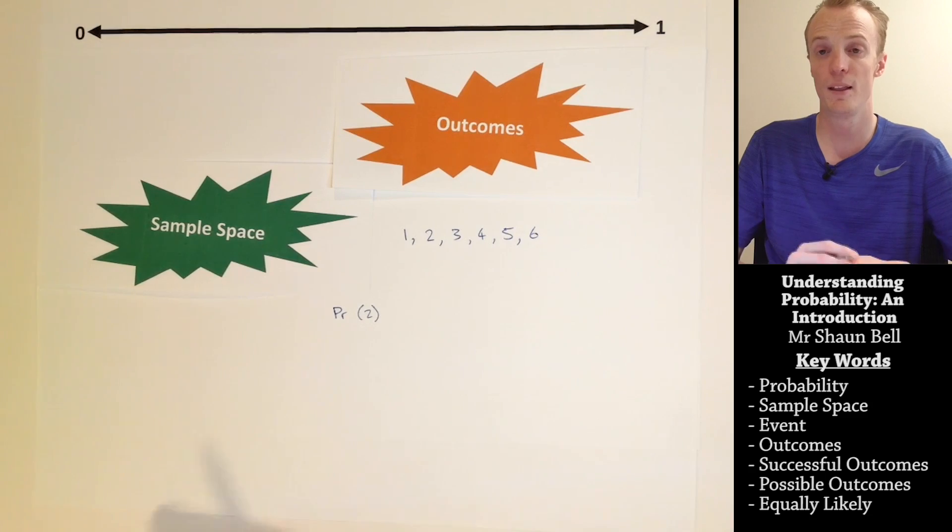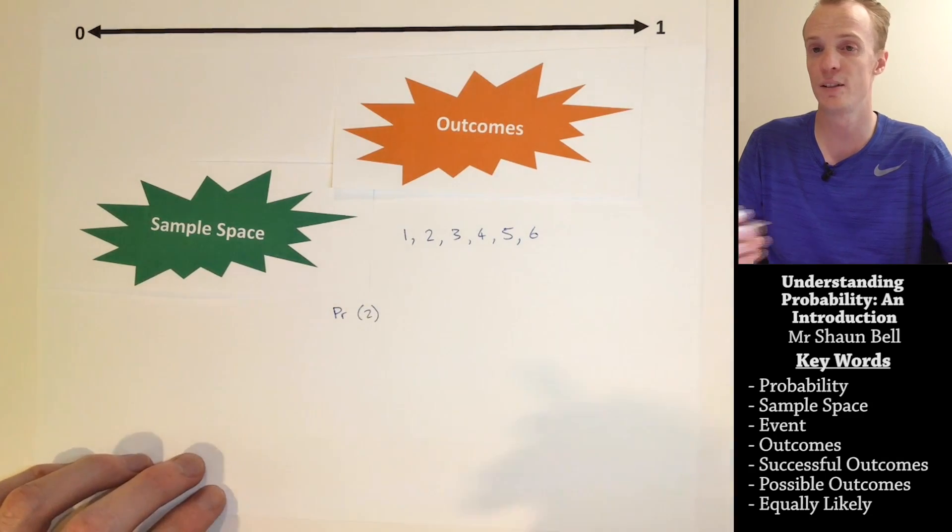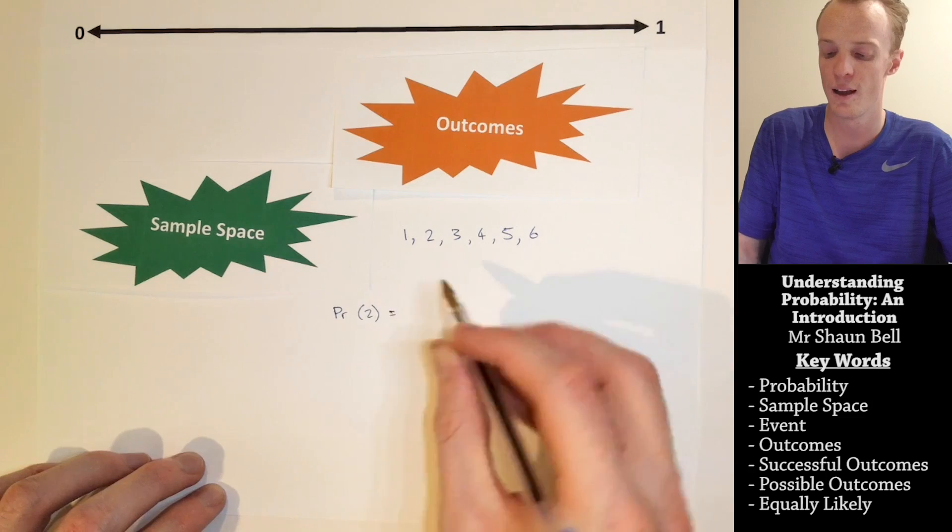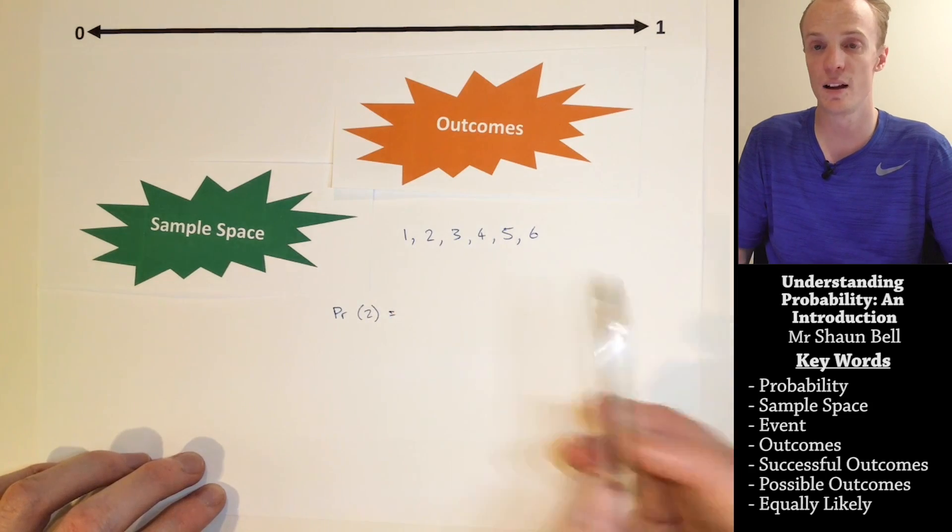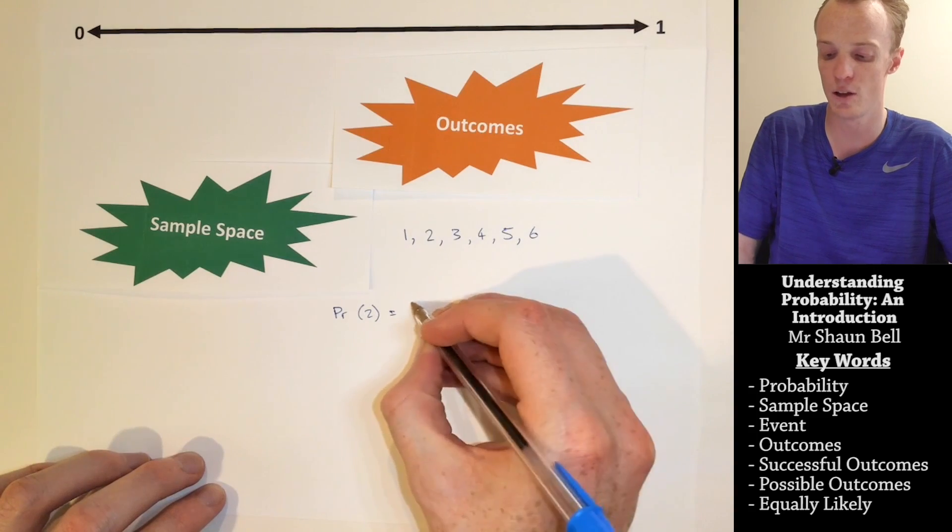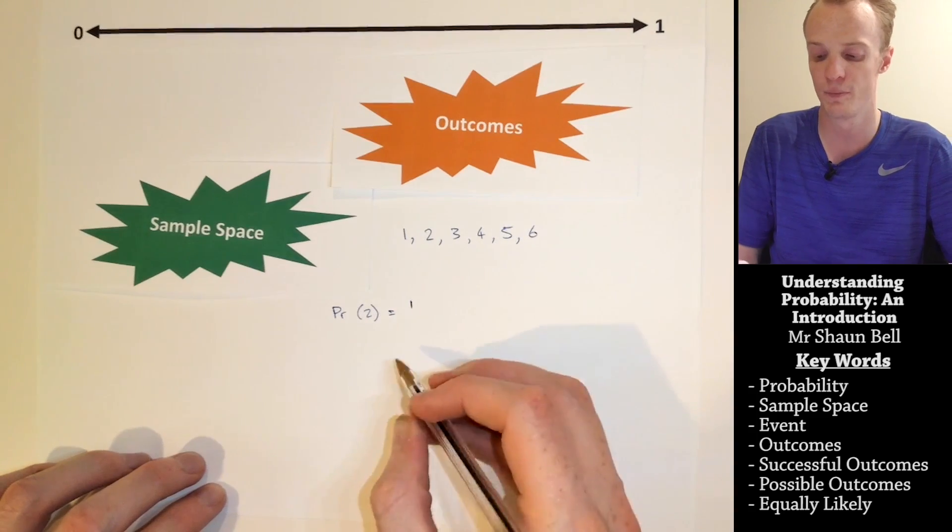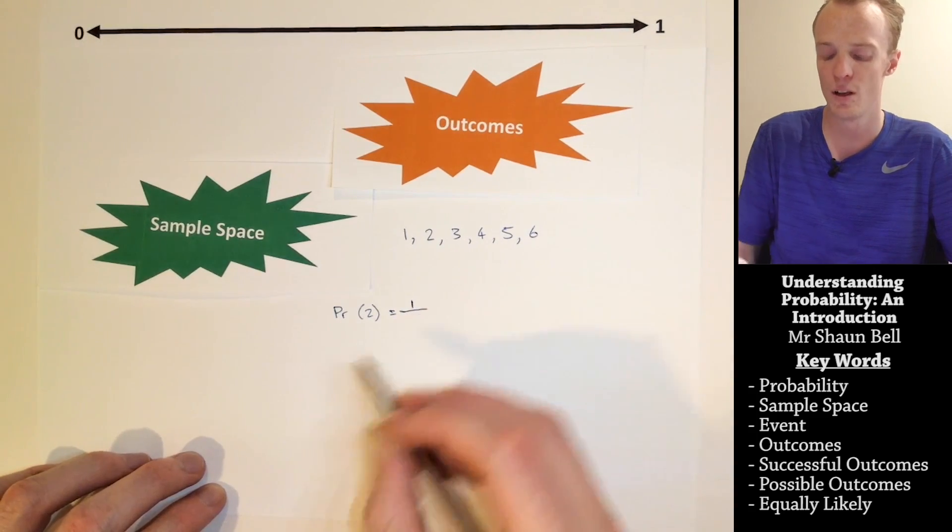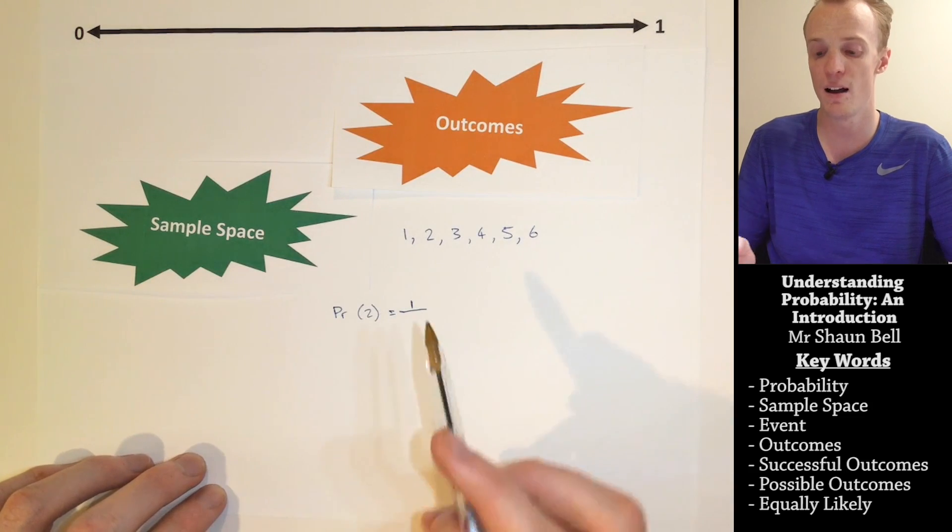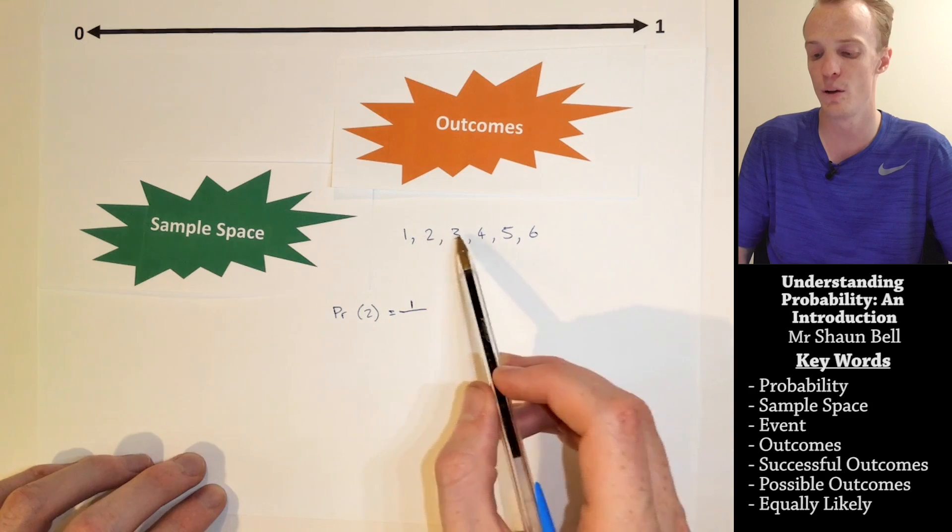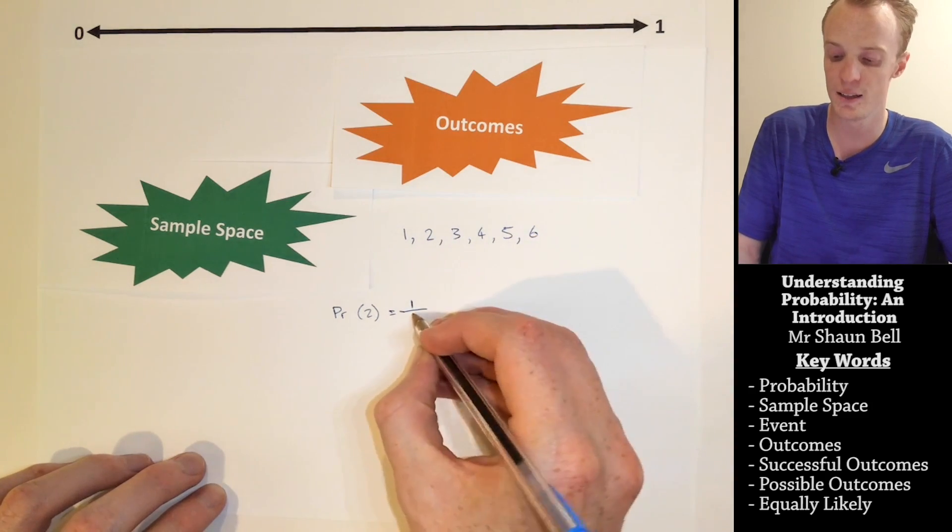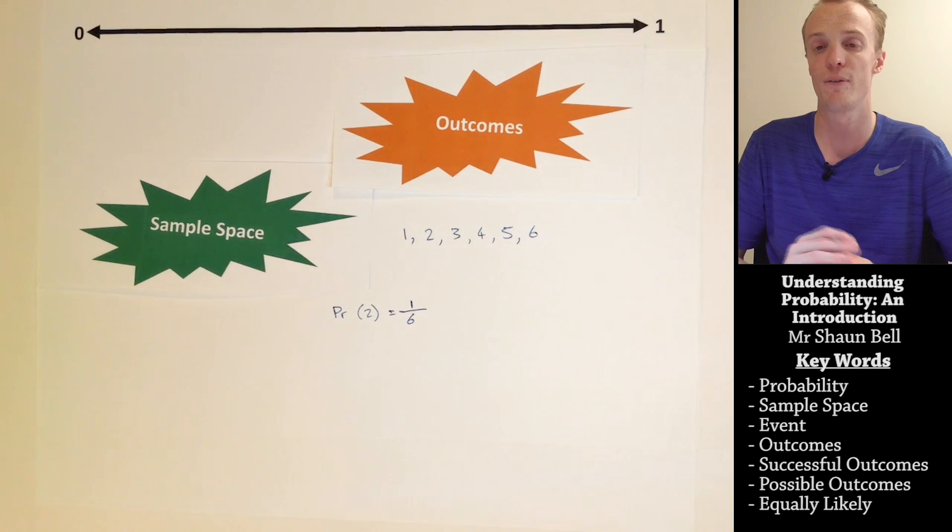If we want to know what the probability of rolling just a 2 on that dice is, we would need to first identify how many successful outcomes there are. In this case, we've only got the 1, so we list that on top of our fraction. On the bottom of the fraction, we need to count how many total outcomes there are within our sample space. In here, we've got 1, 2, 3, 4, 5, 6, so that 6 is represented on the bottom of our fraction.